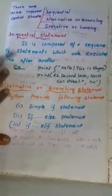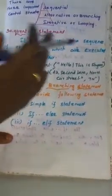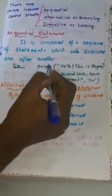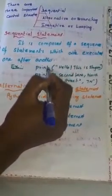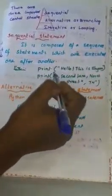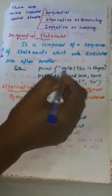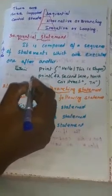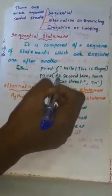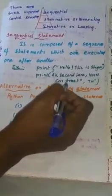What is the output of this example? Since statements are executed sequentially — one after another — it first executes the first print function, then the second. The output is: 'Hello, this is Sham,' then on the next line '43, Second Line, North Coast and Tamil.' So this is a sequence of statements.